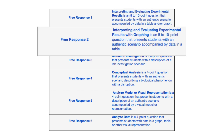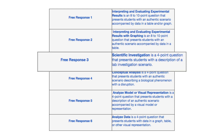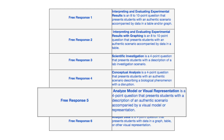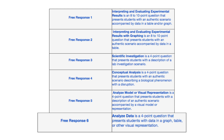Another prompt is interpreting and evaluating experimental results with graphing — another eight to ten point question that presents students with an authentic scenario accompanied by data in a table. Another example is scientific investigation — typically a four point question presenting students with a description of a lab investigation scenario asking you to determine, according to the scientific method, whether the scenario is feasible or experimentally sound. Another example is conceptual analysis — a four point question presenting students with an authentic scenario describing a biological phenomenon with a disruption. Another example is analyze a model or visual representation — a four point question presenting students with a description of an authentic scenario accompanied by a visual model. Another example is analyze data — a four point question presenting students with data in a graph, table, or other visual representation.